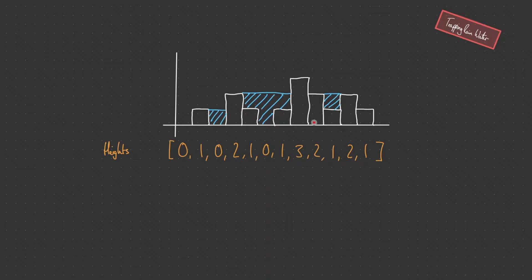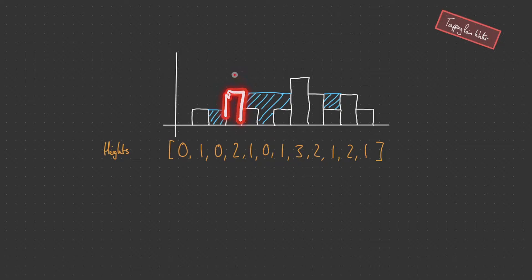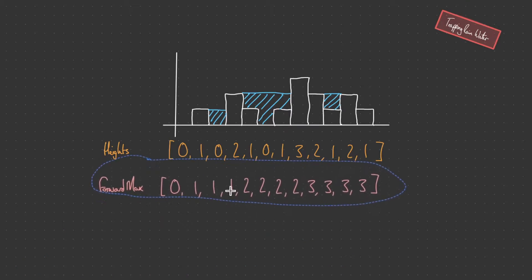Here we have our elevation map and the heights array. We need a way to compute the minimum between two blocks. We're going to do two linear scans of the heights array. In the first pass we iterate through each height and at each point we calculate the running maximum. So for example it starts at one, then two, stays at two, and finally reaches three — carrying that maximum value forward across the rest of the elevation map. We store that within an array.